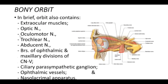The branches of the ophthalmic and maxillary divisions of the trigeminal nerve supply the orbital tissues and then emerge from the orbital cavity as the supratrochlear, supra-orbital, infra-orbital, zygomaticofacial, and zygomaticotemporal nerves. These are the sensory nerves coming out of the orbital cavity as branches of the ophthalmic and maxillary divisions.